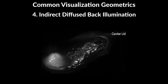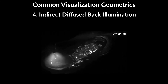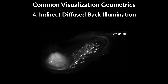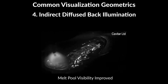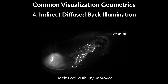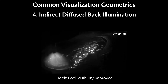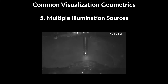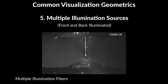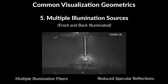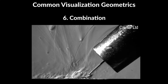4. Indirect diffused back illumination: the illumination is not directed directly at the camera. This setup improves the visibility of the melt pool in comparison to direct back illumination. 5. Application of diffusing elements or multiple illumination sources: distributed illumination, like light delivery via multiple illumination fibers. This setup reduces the amount of specular reflections. 6. Combination of the techniques described earlier.